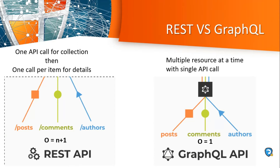Now let's understand the difference between REST and GraphQL. A REST API is an architectural concept for network-based software. On the other hand, GraphQL is a query language — a specific set of tools that operate over a single endpoint using HTTP. A RESTful interface can only return one resource, while GraphQL can get multiple resources at the same time. The main difference is that REST requires multiple calls to fetch specific data, while GraphQL requires only a single request to fetch multiple data.